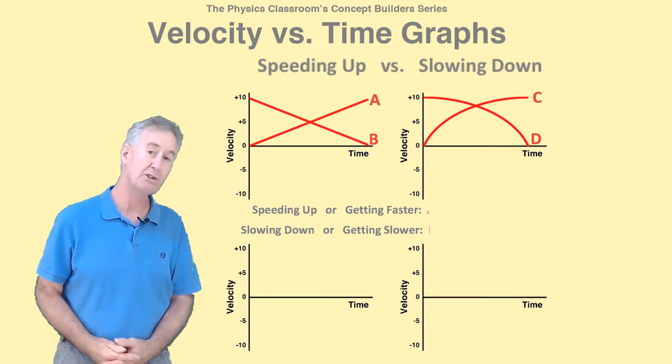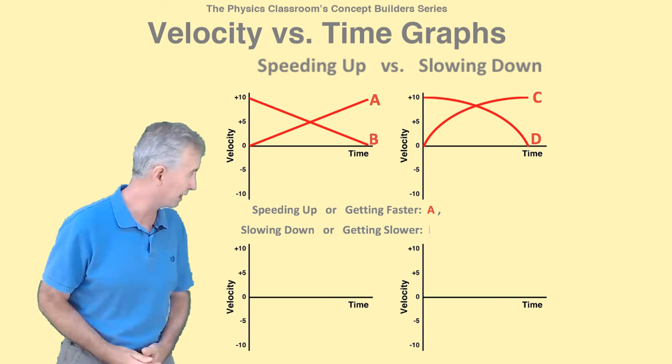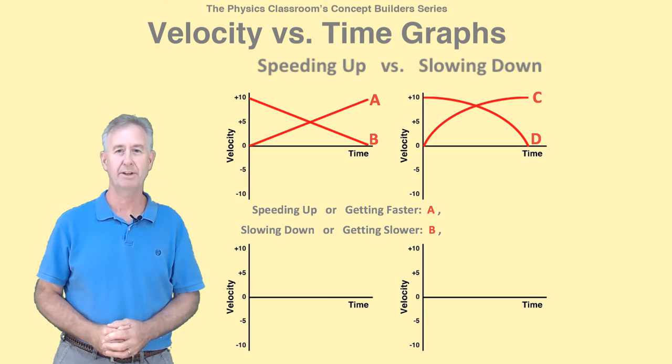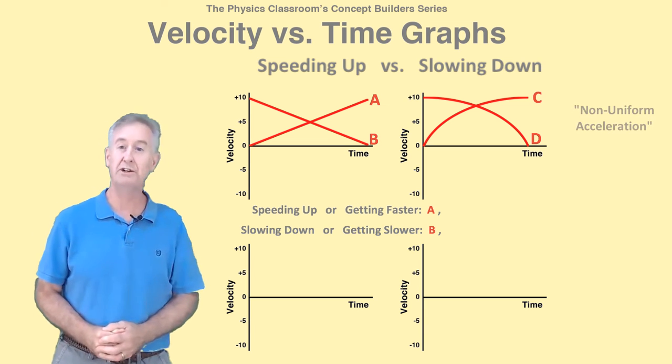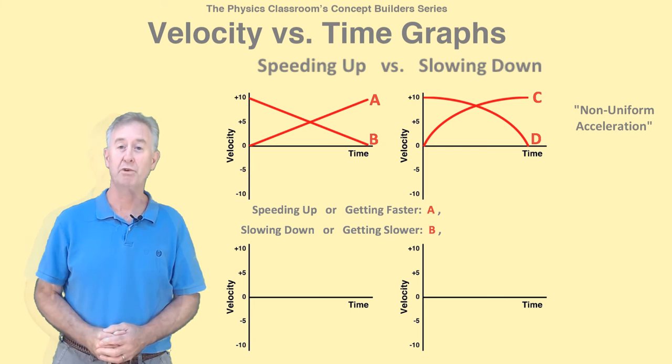Object C is also speeding up and object D is slowing down. They're just changing their speed at a non-uniform rate.